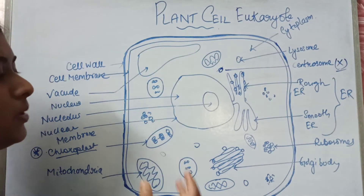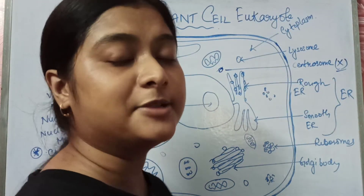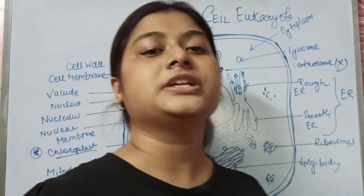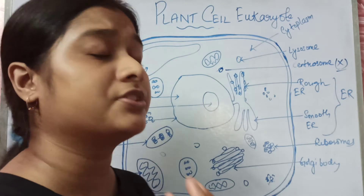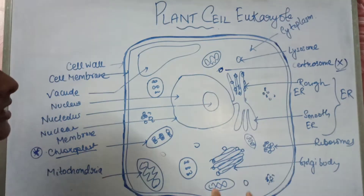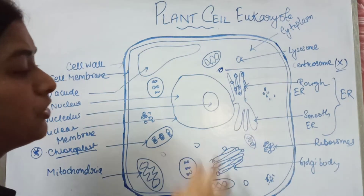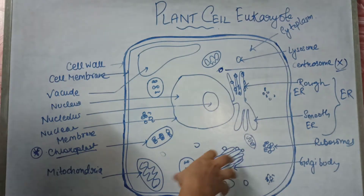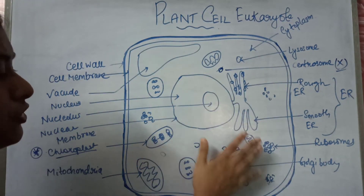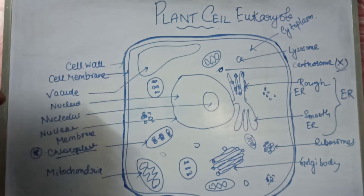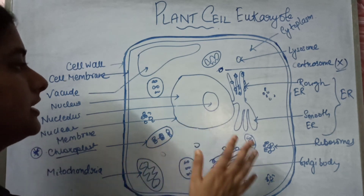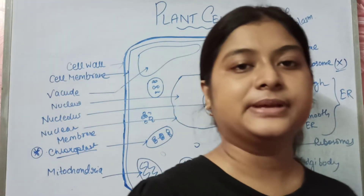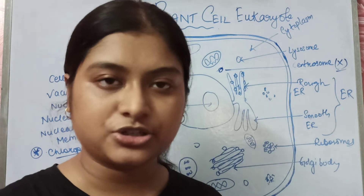Last comes the Golgi body. The Golgi body helps in the packaging of proteins, the transporting of proteins, and the formation of secretory vesicles. All the different types of modifications which proteins need to undergo are processed and packaged inside the Golgi bodies.